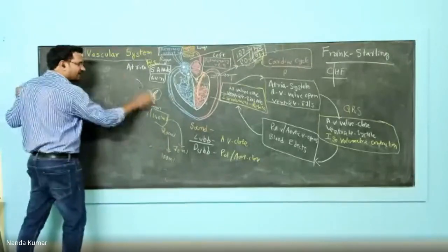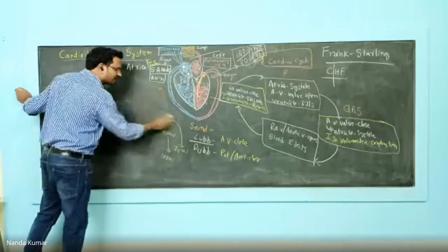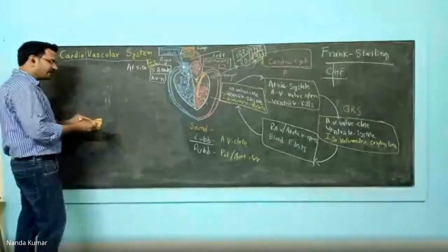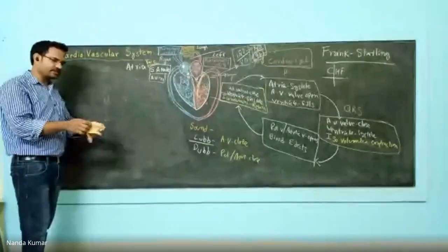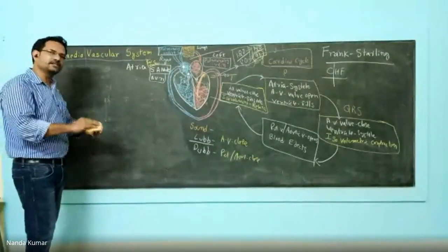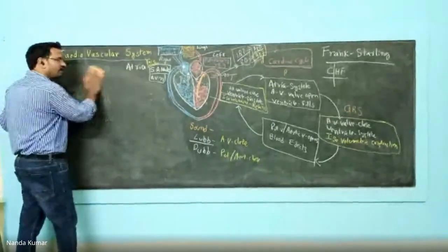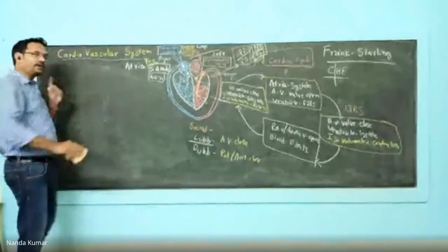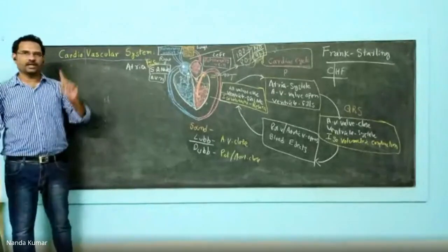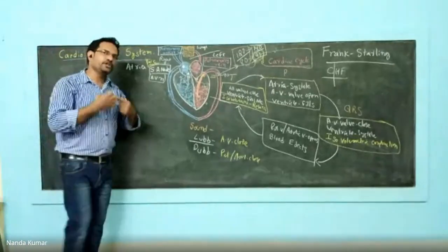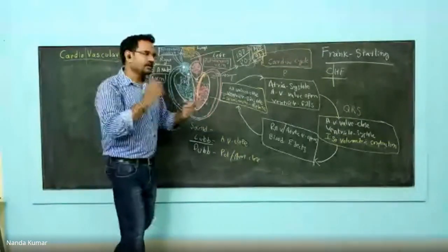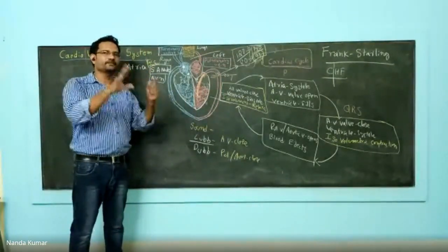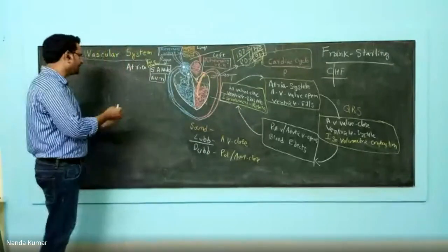Adrenaline and noradrenaline — the neurotransmitter and the hormone — will be acting on G-protein coupled receptors. There are four types of adrenergic receptors: alpha-1, alpha-2, beta-1, and beta-2. Beta-1 receptors are abundantly present on the heart. When that hormone and neurotransmitter are released, they attach to the beta-1 receptor and show their action.